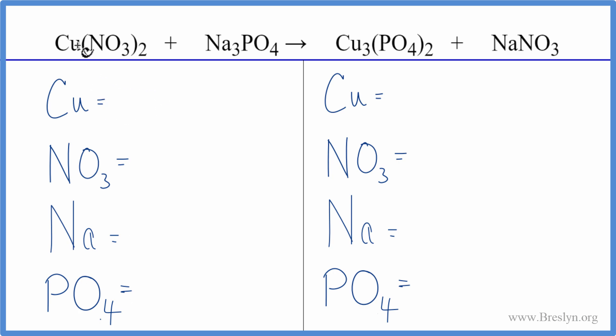Let's try it. We have one copper, one of the NO3, the nitrates, times two. So we have two of those, three sodium atoms, and just the one phosphate. On the product side, we have three coppers, one nitrate, one sodium, and then the one phosphate times two. So we have two of those.